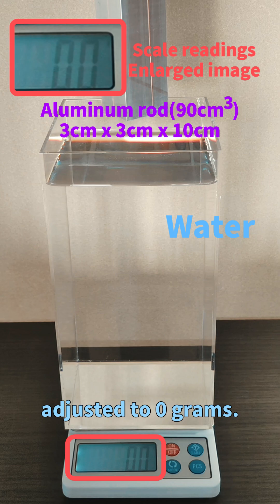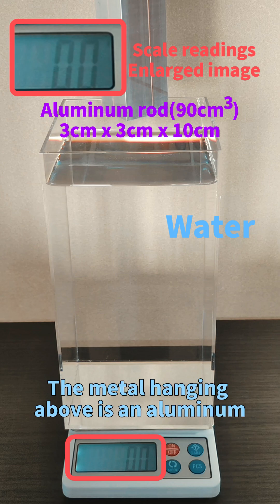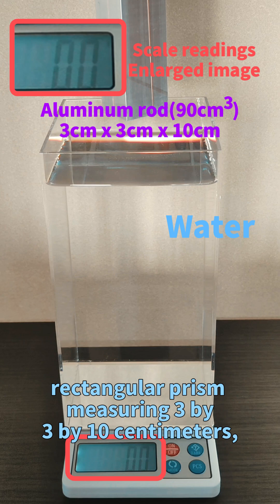The metal hanging above is an aluminum rectangular prism measuring 3 by 3 by 10 centimeters, with a volume of 90 cubic centimeters.